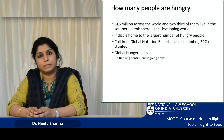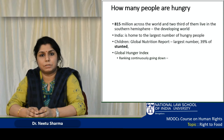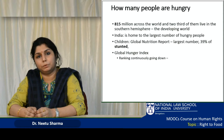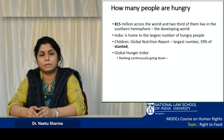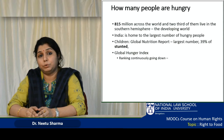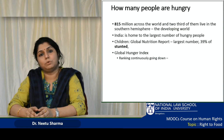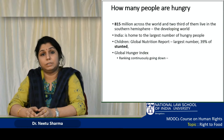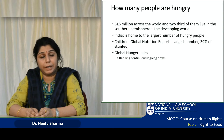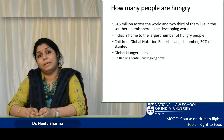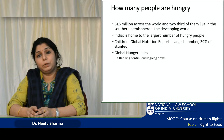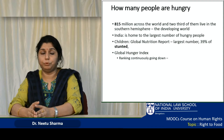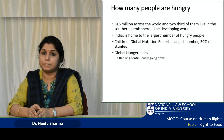In the Global Hunger Index, for the past 5 or 6 years, India's rank has been really coming down. We started with 86th. In 2018 we have come down to 102nd rank, having been at 100th rank the previous year. That means that as compared to other countries, we are not doing well enough in ensuring food for everyone on a regular basis.